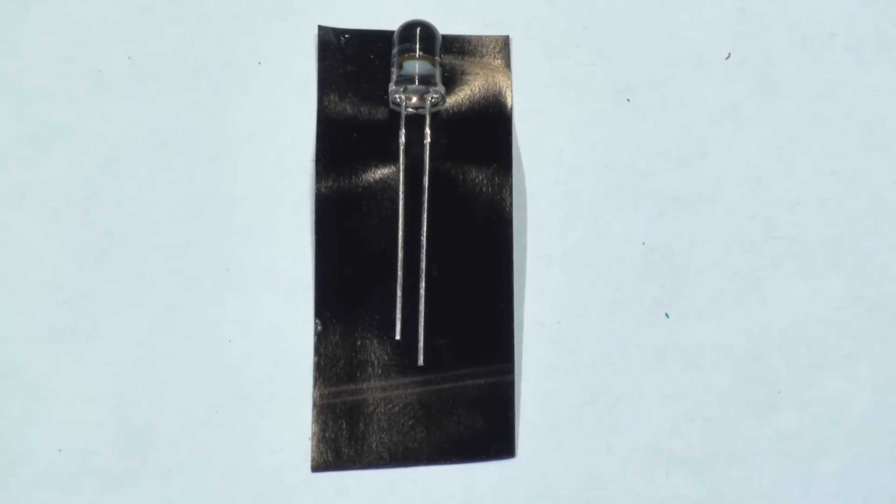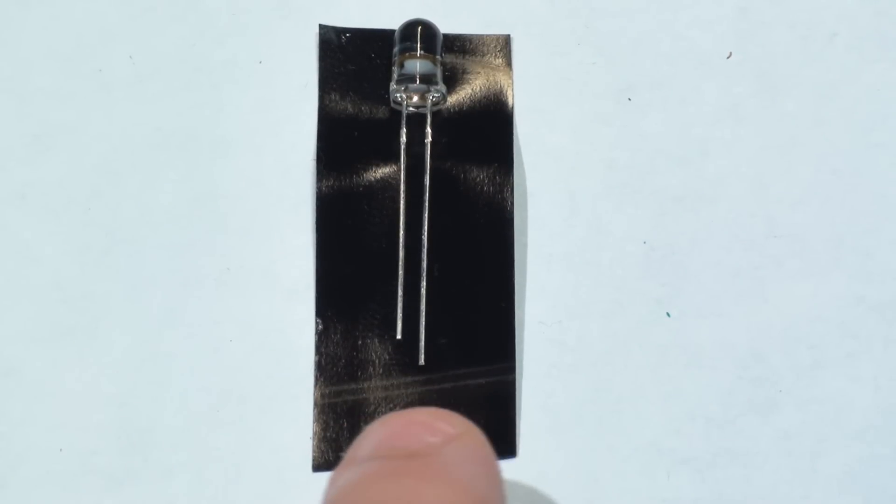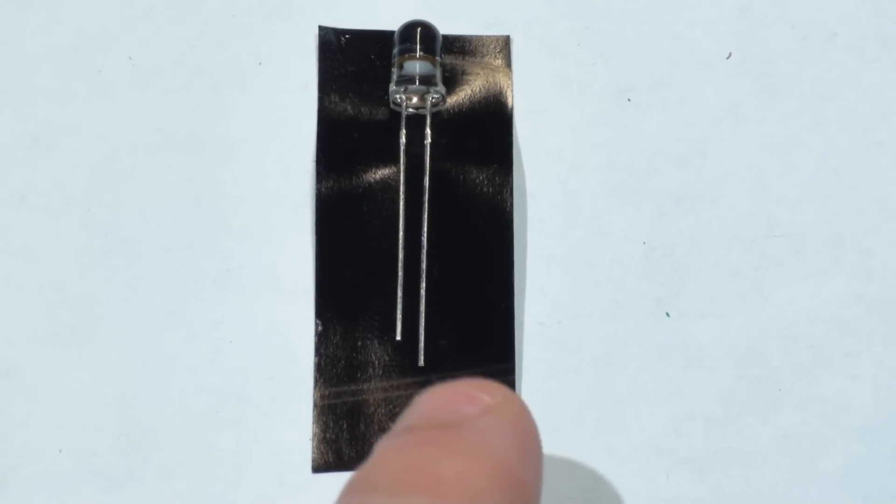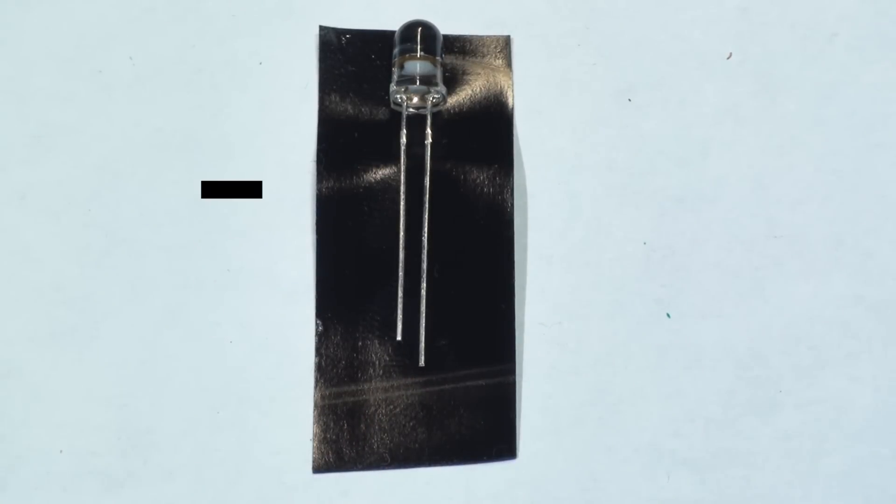Next, we need to decide what side of our LED is positive and what side is negative, so we can solder it to the right lead. Take your LED, and looking at it, you'll notice that one leg is longer than the other. Our longer leg is actually our positive leg, and our shorter leg is our negative leg. Now that we know what leg is positive and negative, we're ready to solder this LED to the leads.